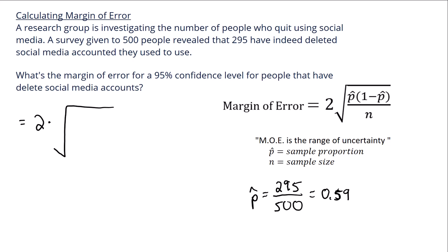Now we just plug that into the formula, which is going to be 0.59 up here on top in the numerator, in parentheses 1 minus p-hat, which is 0.59, close parentheses, and we divide that by n, which is the sample size. And how many people were surveyed? It was 500, so that goes there in the denominator.